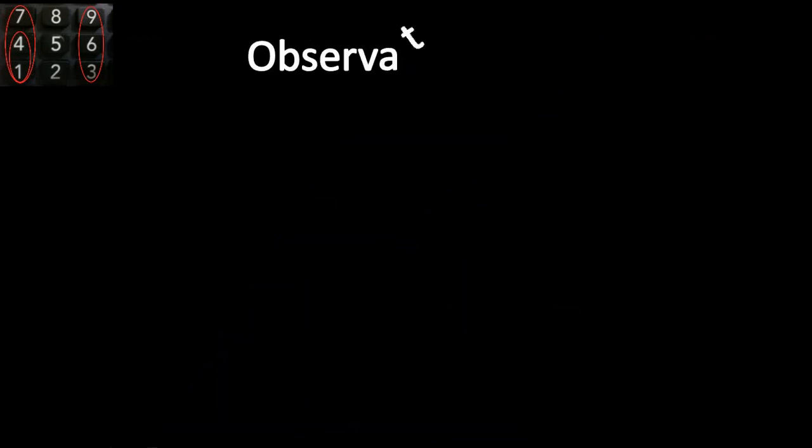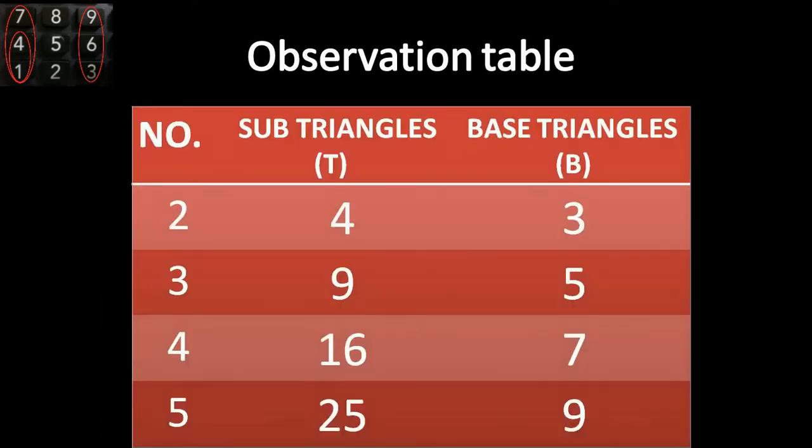So here comes our observation table: sub triangles are denoted by T and base triangles are denoted by B. You can pause the video to view all.